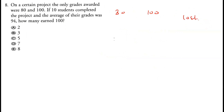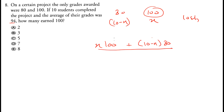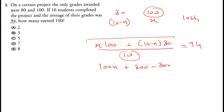Question eight: On a certain project, only grades of 80 and 100 were awarded among 10 students, and the average was 94. Let x students get 100, then (10 - x) students get 80. So (100x + 80(10 - x)) / 10 = 94. This gives 100x + 800 - 80x = 940, so 20x = 140, x = 7. Option D is correct — seven students got 100 marks.